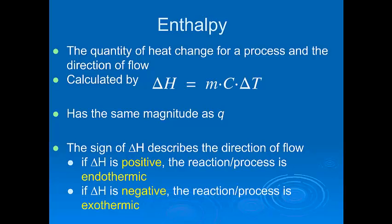We calculate it by the equation delta H, which is the symbol for enthalpy, equals M, which is mass, times C, which is specific heat capacity, times delta T, which is the change in temperature.